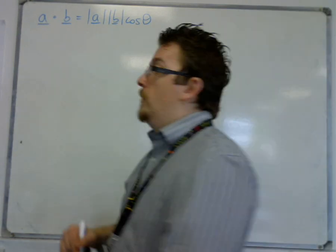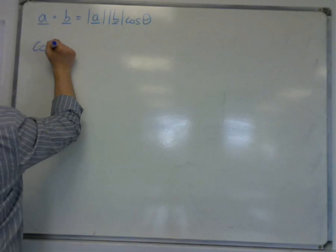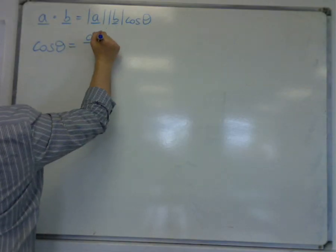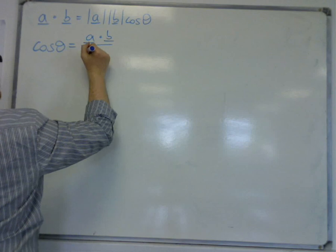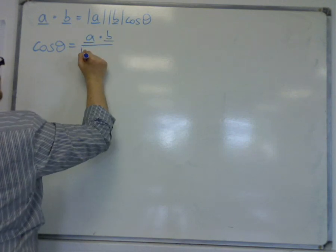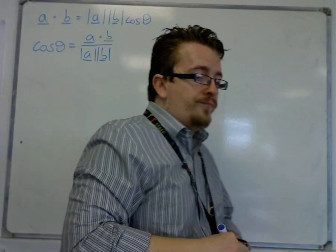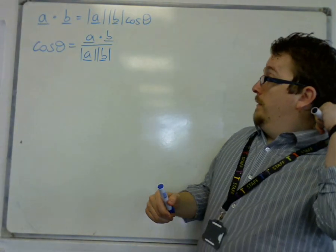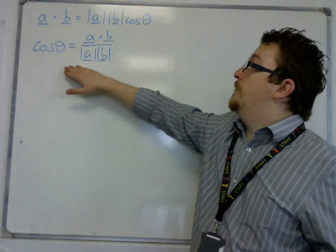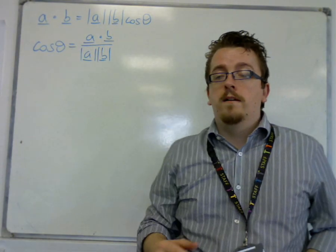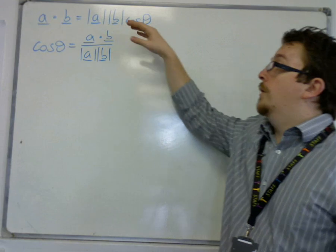It can also be written as cos theta equals a dot b over mod a mod b, depending on how you want to use it and how you want to remember it. Obviously this is just a rearrangement of the first equation.